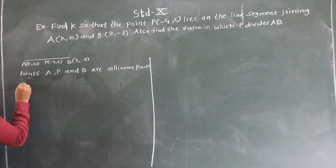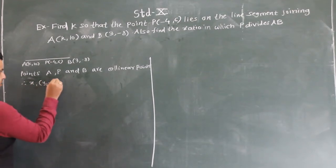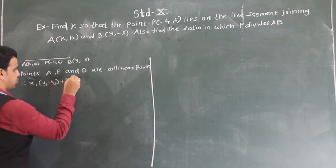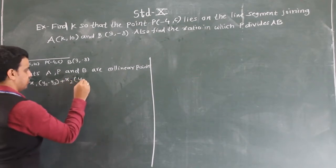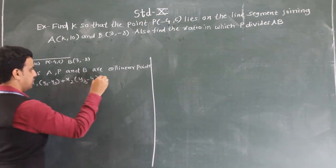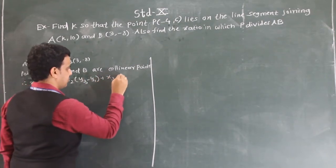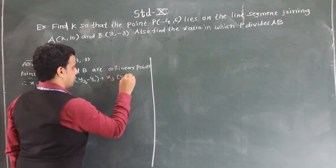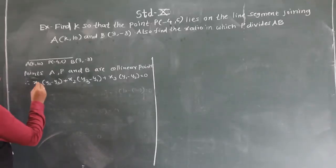We use the collinearity condition: x1(y2 - y3) + x2(y3 - y1) + x3(y1 - y2) = 0. Now we will put in the values to find K.